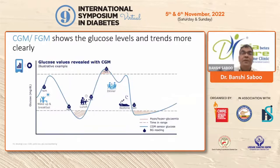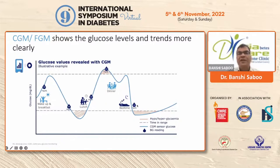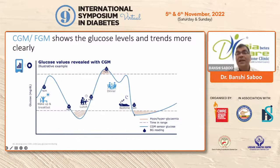If a patient is only doing self-monitoring of blood glucose — say four or five times a day — you may find four out of five reports are normal, with only a post-lunch sugar of 200. But if you do continuous glucose monitoring on the same patient, you will be surprised to find that the patient is actually getting pre-lunch hypoglycemia, post-lunch hyperglycemia, and midnight hypoglycemia — so we are missing major episodes of hypoglycemia with self-monitoring alone.